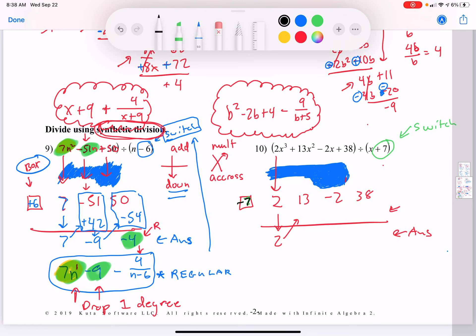So we're going to multiply across. 2 times negative 7 is negative 14. Add down, negative 1. Multiply across, negative 1 times negative 7 is positive 7. Add down, it's 5. 5 times negative 7 is negative 35. Add down, 3.